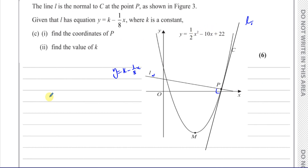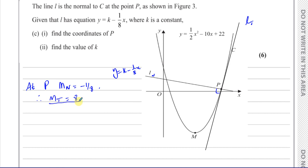At point P, the gradient of the normal equals the gradient of this line, which is minus one over eight. Therefore, the gradient of the tangent at P is the negative reciprocal of this, which is eight. You flip the sign and turn it upside down: minus one over eight times eight gives minus one, confirming they are perpendicular. So at P, dy/dx equals eight, and equating the derivative of the curve to eight will let us find the coordinates of P.